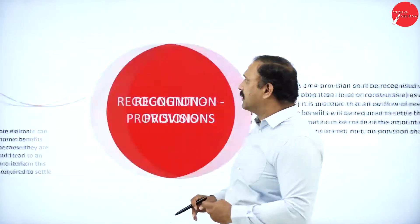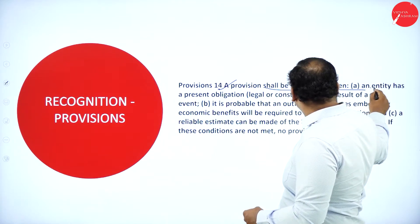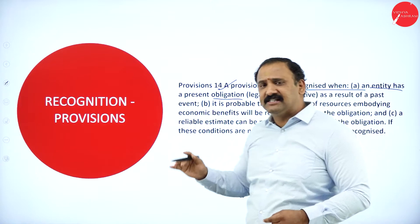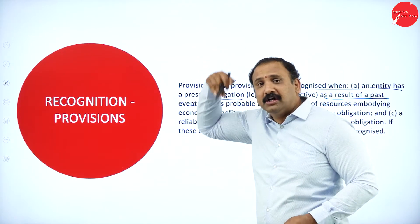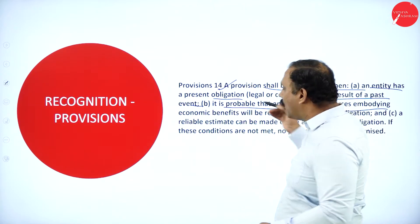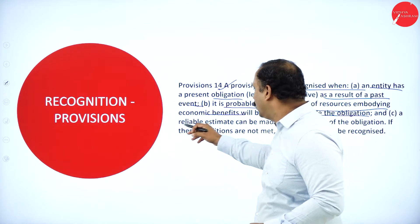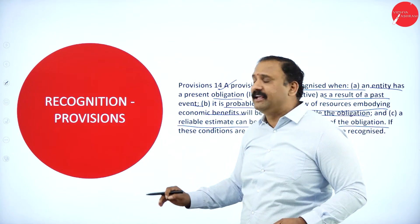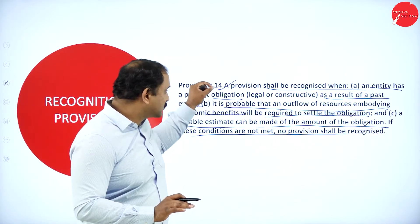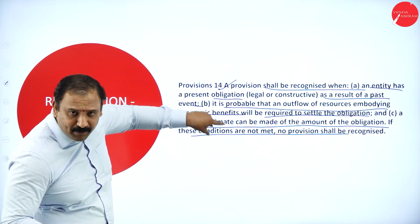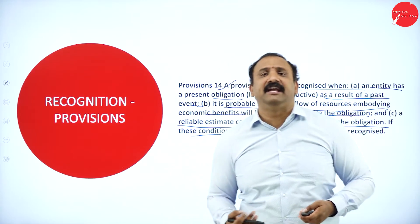The standard distinguishes provision recognized as liability — recognized only when: the entity has a present obligation as a result of a past event; it is probable that an outflow of resources embodying economic benefits will be required to settle the obligation; and a reliable estimate can be made of the amount. If these conditions are not met, the provision will not be recognized. Only when all three criteria are satisfied does it come into account.